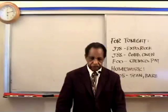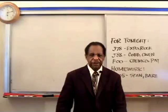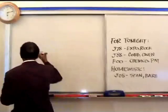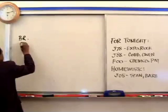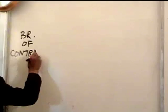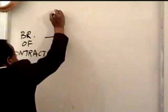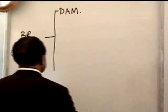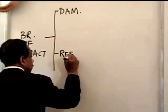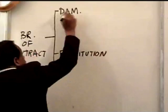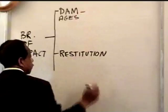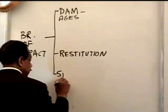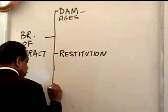Let us begin with the remedies for breach of contract. The remedies for breach of contract include damages, restitution, and specific performance.